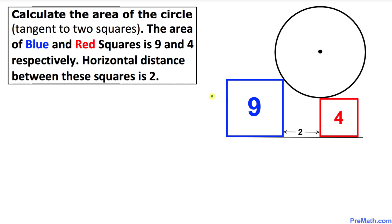Welcome to pre-math. In this video tutorial we are going to calculate the area of a circle that is tangent to two squares. The area of the blue square is 9, whereas the area of the red square is 4. Moreover, the horizontal distance between these two squares is 2, as you can see in the given figure.